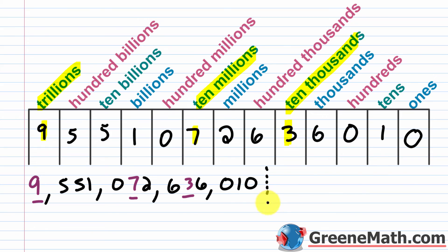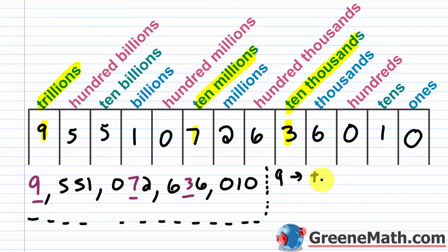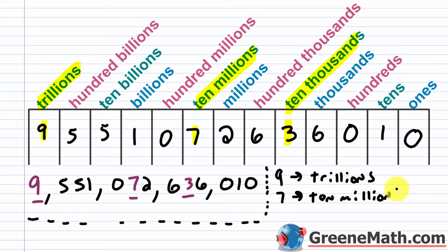So for the answers: the 9 is in the trillions place, the 7 is in the ten millions place, and the 3 is in the ten thousands place.